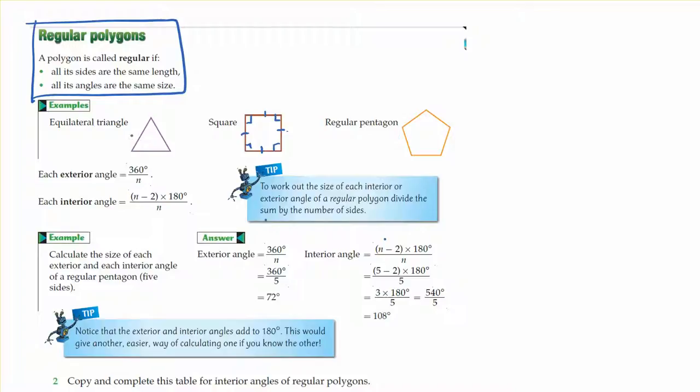Examples of regular polygons could be an equilateral triangle, where we know that each angle is 60 degrees, and all the lengths have to be the same to be an equilateral.